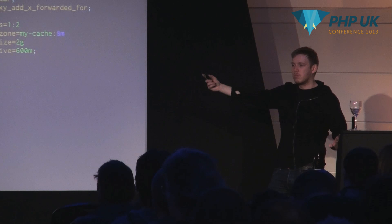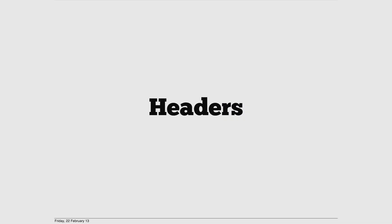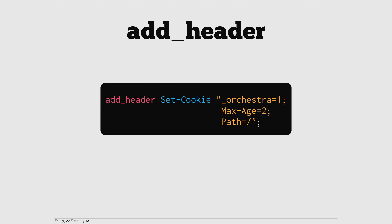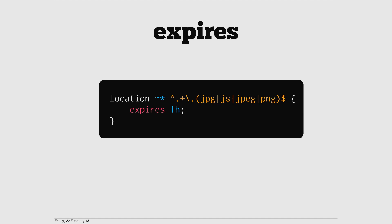Dealing with headers in Nginx is interesting. It has a simple header functionality — here I'm just setting a simple cookie called '_orchestra' equals one, only active for two seconds, on the top path for orchestra.io. Nginx also has an 'expires' directive you can set to one hour, or 'max' to put it as far in the future as possible — useful for images and static assets.